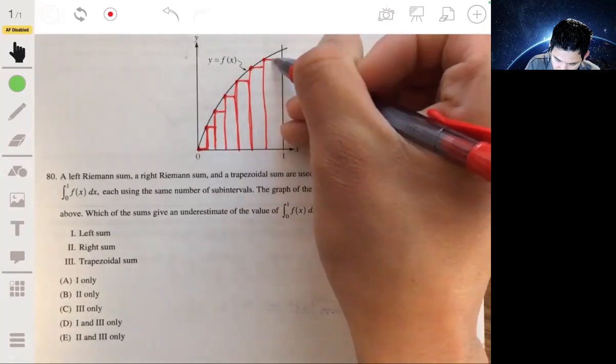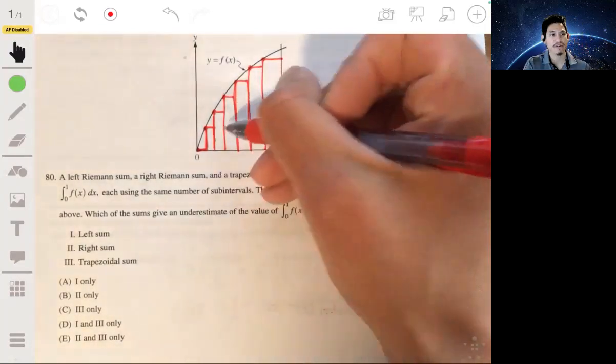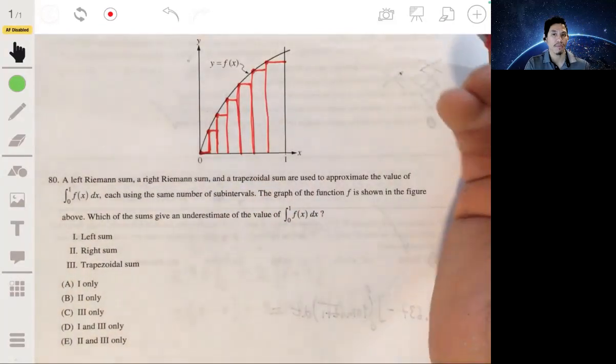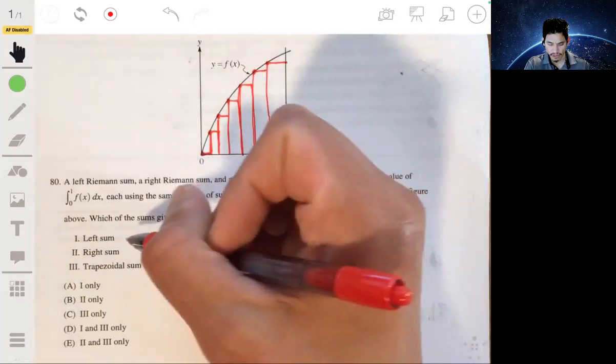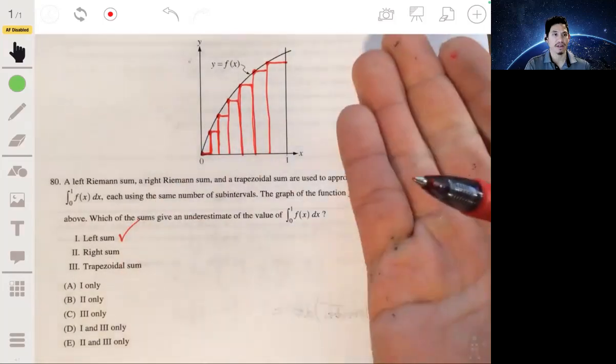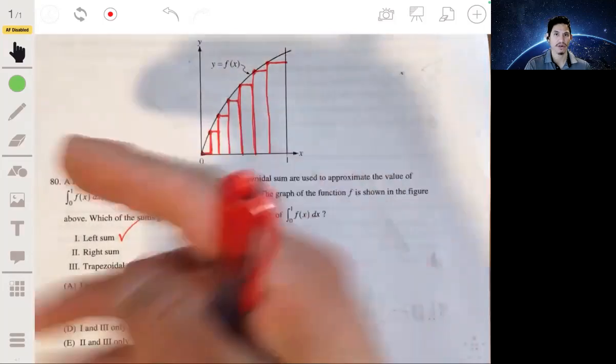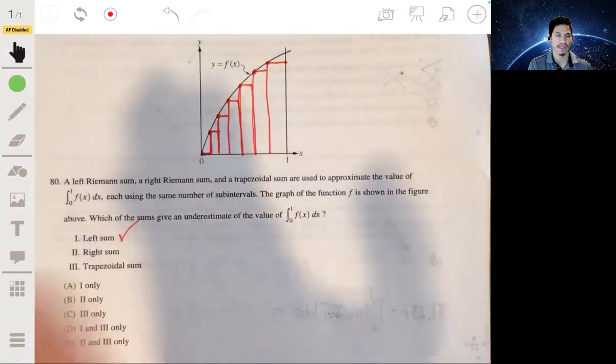So you can see, just from this visual, that these graphs are underestimating the area of the actual graph. So the left sum is going to be an underestimation, because these rectangles are all inscribed in the function.